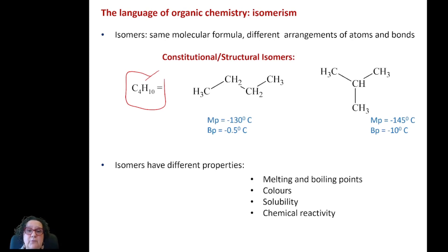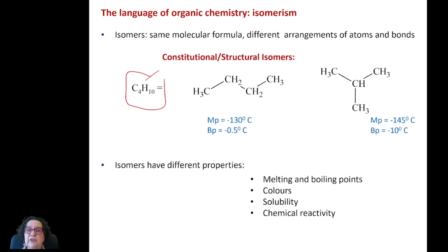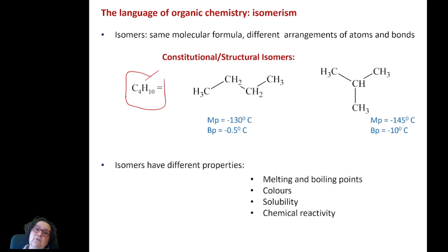They have different melting points and different boiling points. They might react in a similar way because they are based on carbon and hydrogen, but they are not particularly related to one another except that they happen to have 4 carbons and 10 hydrogens. We call those constitutional isomers or structural isomers — they have the same molecular formula and a different structure.